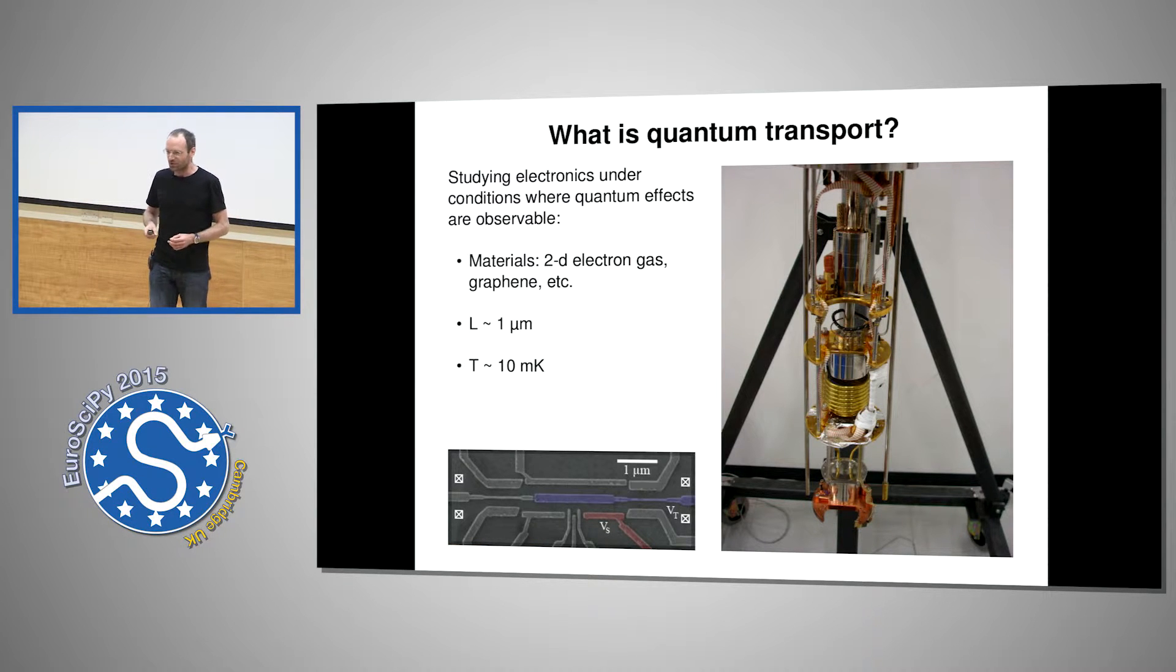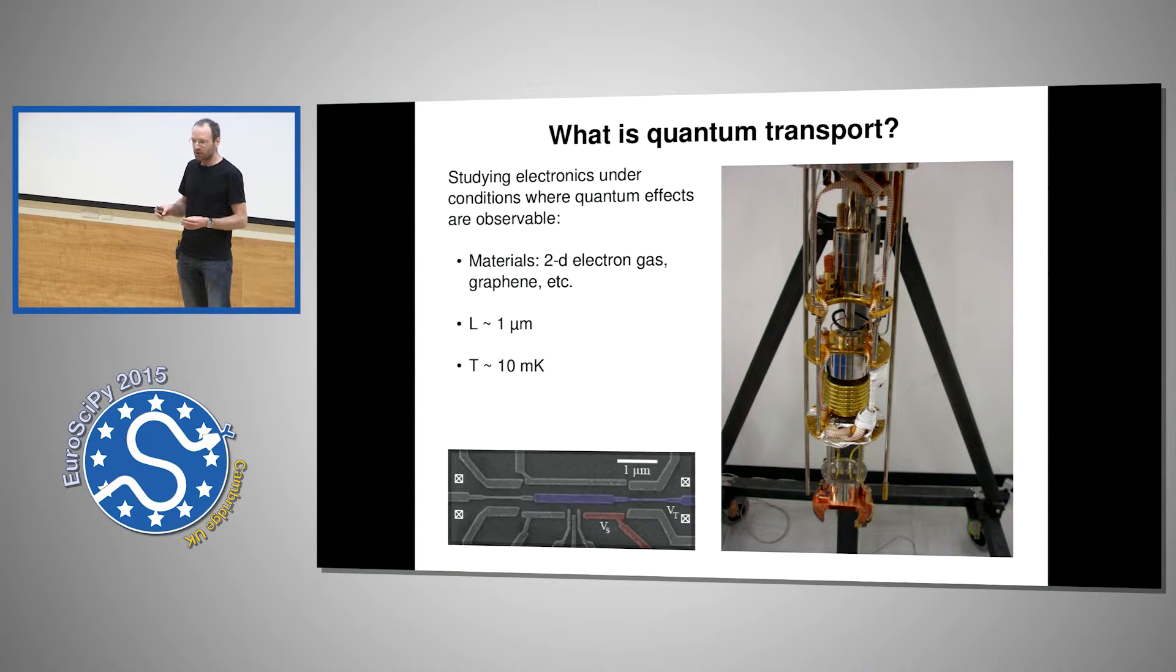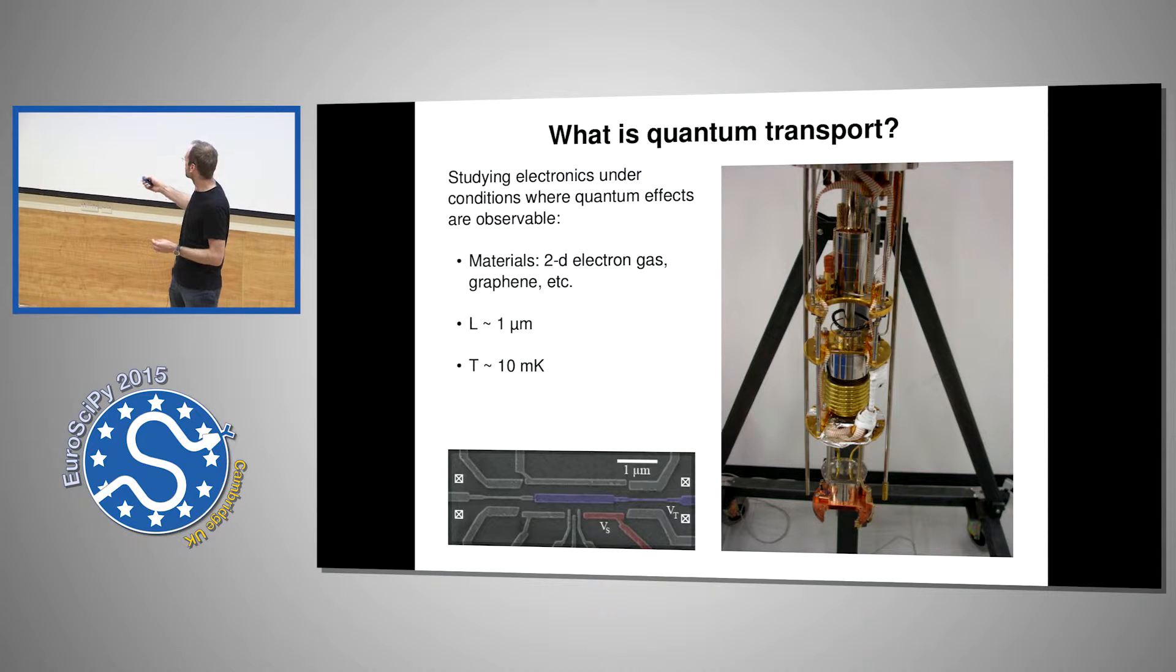So what is quantum transport? Quantum transport is when you study electronics under conditions where the quantum effects are important, which typically means that you are at very low temperatures, way lower than one Kelvin, and also at small length scales. For example, this image at the bottom shows a typical quantum transport setup. The experimentalists who do these things put the sample into a dilution fridge which is shown in the picture next to it.